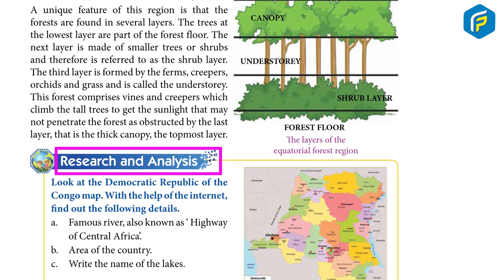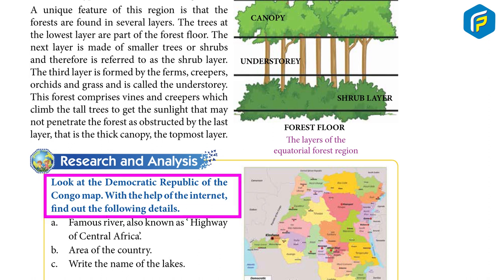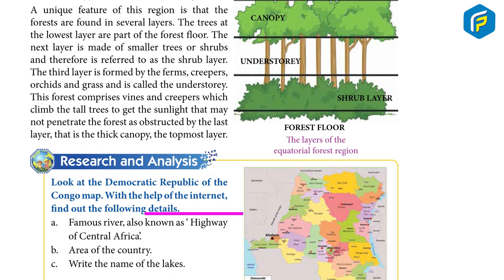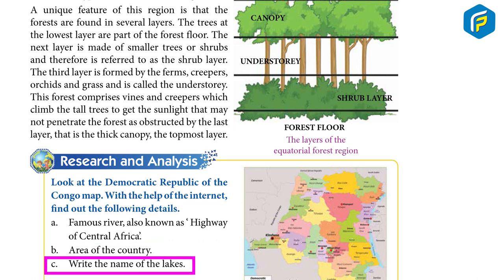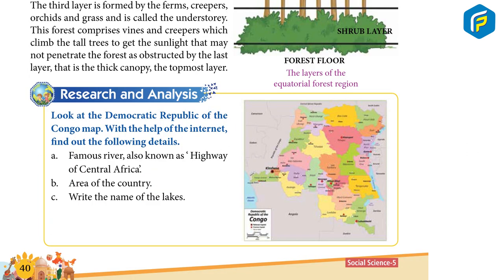Research and analysis: Look at the Democratic Republic of the Congo map. With the help of the internet, find out the following details: A) a famous river also known as the highway of Central Africa; B) the area of the country; C) write the names of the lakes.